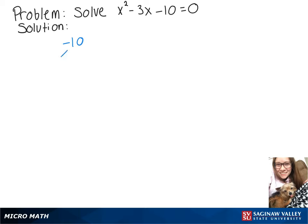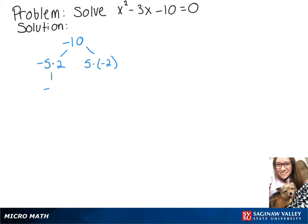We can either do -5 times 2 or 5 times -2. When we add -5 and 2, we'll get -3. When we add 5 and -2, we get positive 3. So we're going to want to use -5 and 2.